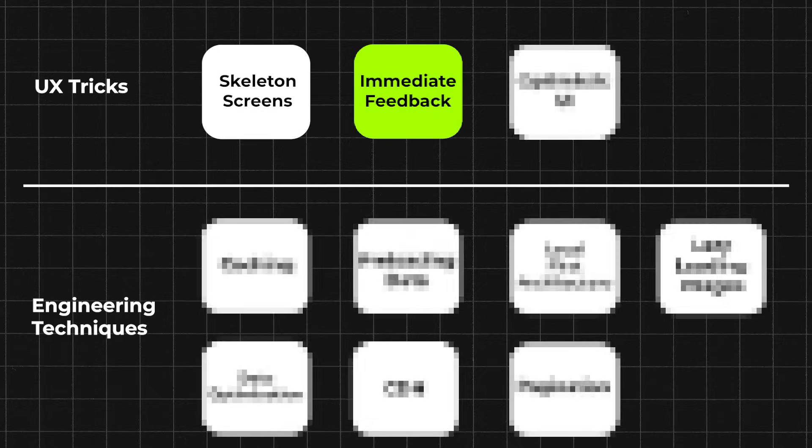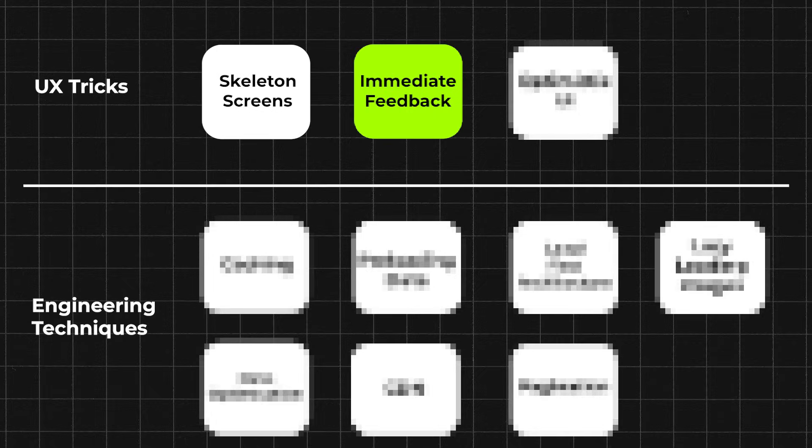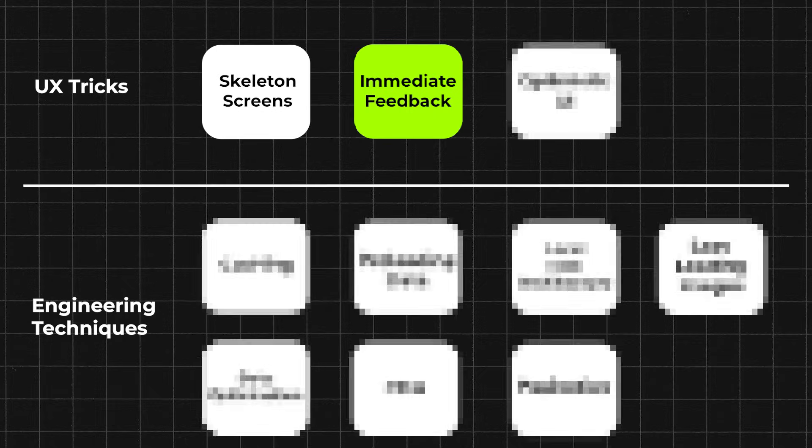Tip number two: immediate feedback. If you cannot give the user what they want in under 100 milliseconds, at least acknowledge the action. The simplest way to do this is by visually responding to the tap — for example, highlight the button when it's pressed or give haptic feedback.